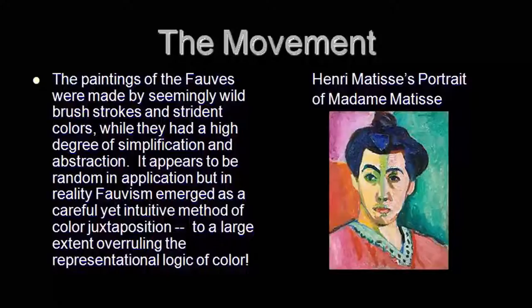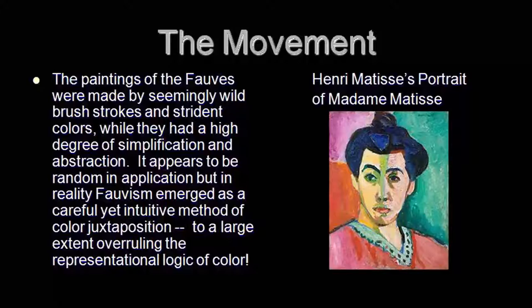Fauvist artists, and Fauvism in general as a movement, tried to overrule the representational logic of colour — the idea that the colour of a particular object should represent that object, as if colour has no independent value and is always tied to the object. Fauvist painters like Matisse, André Derain, Vlaminck and others changed the role of colour. The way colour was used by painters underwent a huge change.